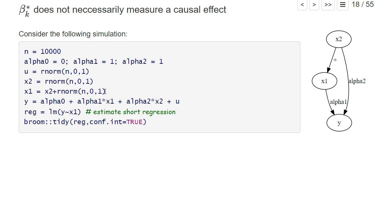This is shown in this graph: x2 influences x1 positively. Then we have our dependent variable y that's given by this constant alpha0 plus alpha1 times x1 and also alpha2 times x2 and the error term u.